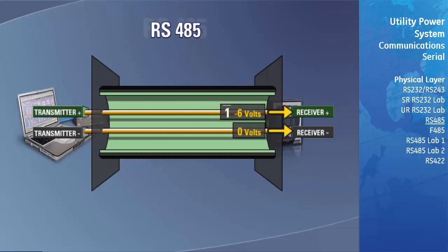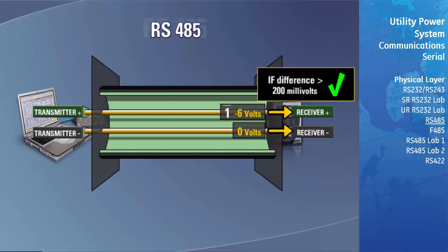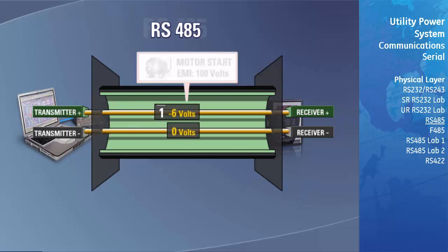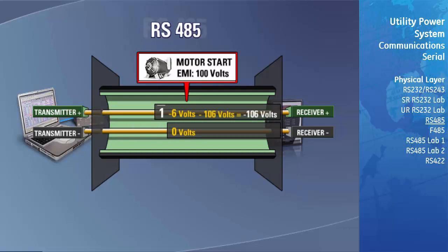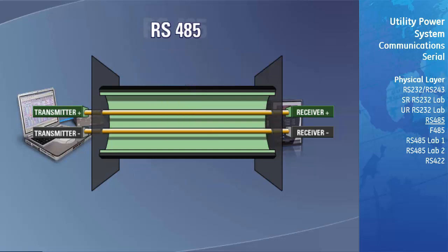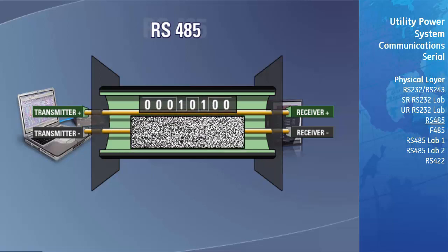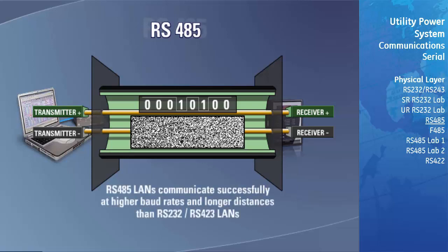The transmitting driver induces a voltage difference between the two conductors. A logic 1 can range from minus 1.5 to minus 6 volts, while a logic 0 can range from plus 1.5 to plus 6 volts. The receivers measure the voltage difference between the two conductors; as long as the difference is greater than 200 millivolts, the receiver can determine if a logic 1 or logic 0 is being transmitted. Since the two conductors are in the same cable and in close proximity, any electromagnetic radiation induces the same voltage magnitude in both conductors, so the voltage difference remains the same. This allows RS-485 to communicate successfully at higher baud rates and longer distances than RS-232 or RS-423.